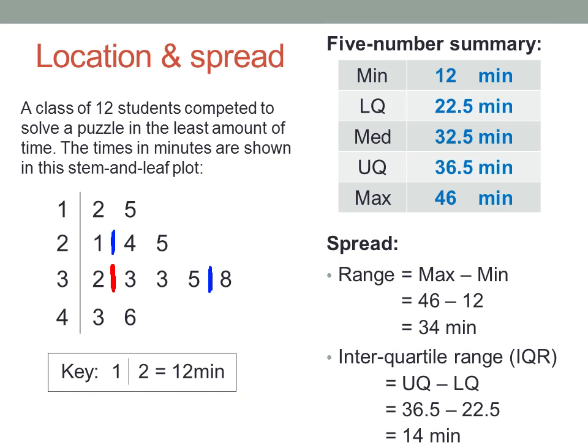And the interquartile range, often abbreviated IQR, is the difference between the quartiles, here thirty-six point five minus twenty-two point five, or fourteen minutes.